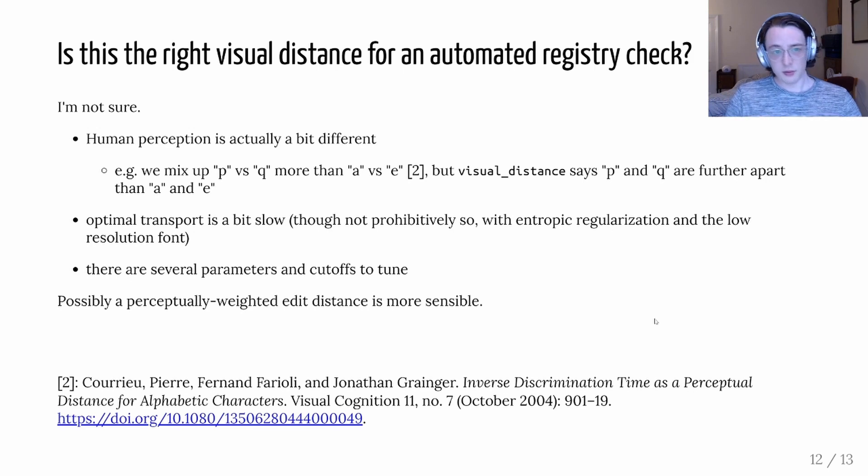So is this the right visual distance for an automated registry check? I am not sure. So human perception is actually a little bit different. For example we mix up p and q more than a and e but this visual distance function says p and q are further apart than a and e for example. Optimal transport's a bit slow but not prohibitively so and there's several parameters and cutoffs that we would need to tune. I was thinking actually maybe a perceptually weighted edit distance might be more sensible in the end.